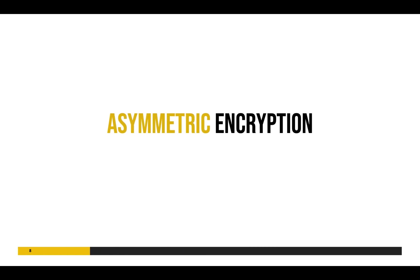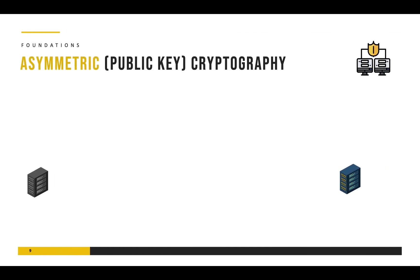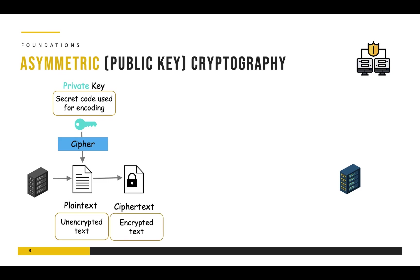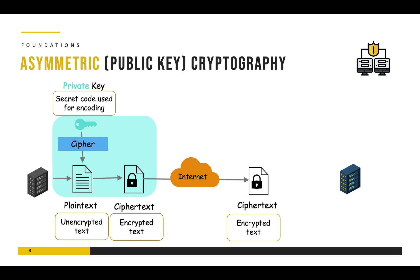The second category of encryption is called asymmetric encryption, also known as public key cryptography. At the source we have a plain text document; we apply the private key using the cipher or algorithm and obtain the ciphertext, which is the encrypted text. This completes the encryption part. The ciphertext is transmitted over the public internet and reaches the destination, where we use a different type of key — the public key — for decryption. The key difference in public key cryptography is that we use different keys: private for encryption and public for decryption.